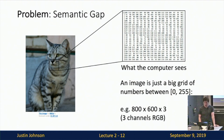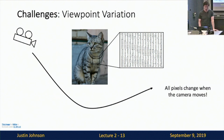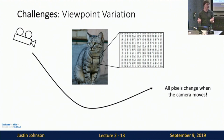What's worse is that this entire grid of numbers can change drastically from relatively simple changes to the image. If we change the viewpoint — photographing the same cat from a slightly different angle — we'd still recognize it as the same cat, but due to the semantic gap, all of the pixel values would change in a very unintuitive way. We need algorithms robust to these massive changes in raw pixel values from simple changes to the image.